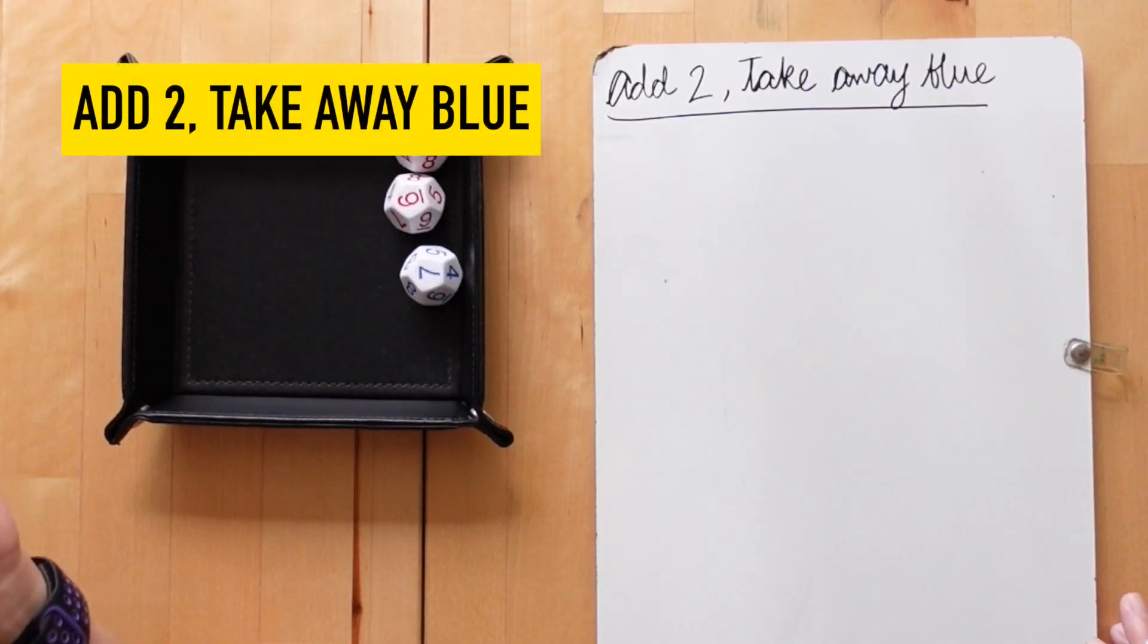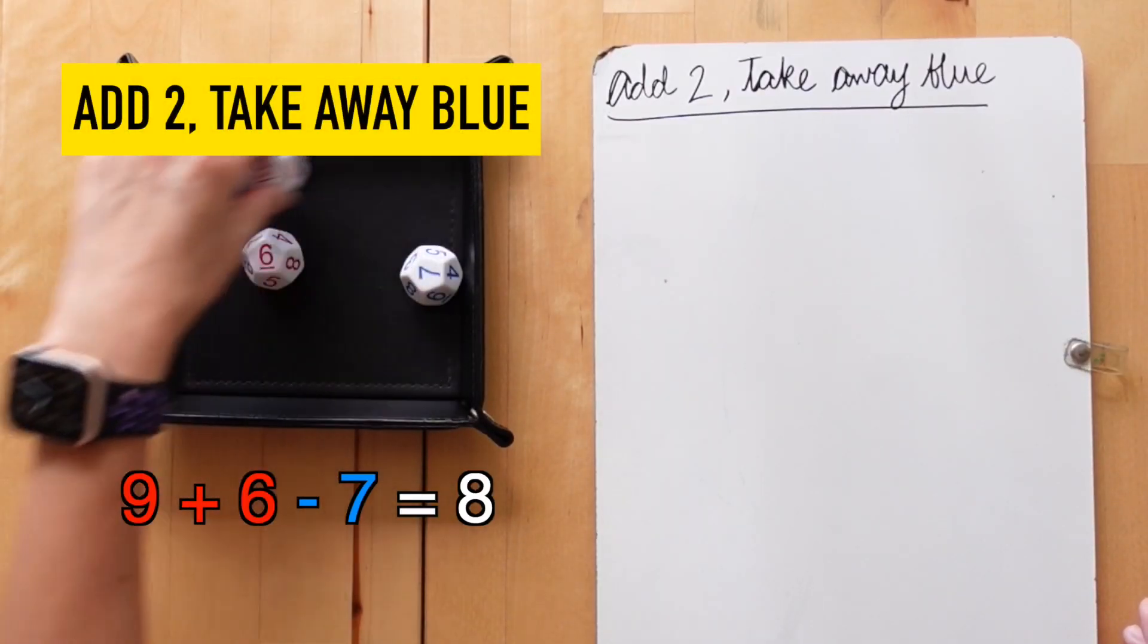So these dice would work with any of those games I've mentioned earlier in this video, but with higher numbers. Here's a game that Kennedy and I have been playing to practice subtraction strategies. This game is called Add to Takeaway Blue.